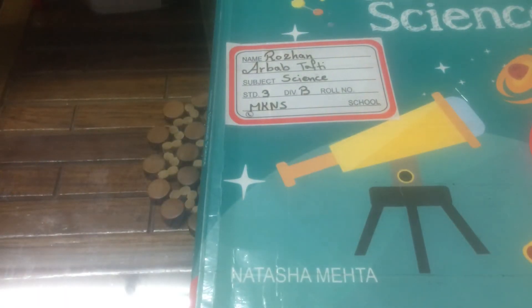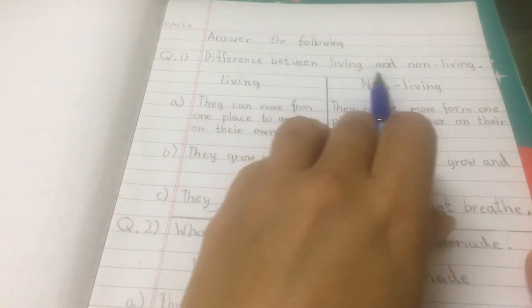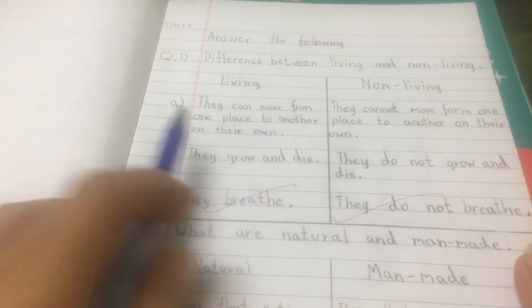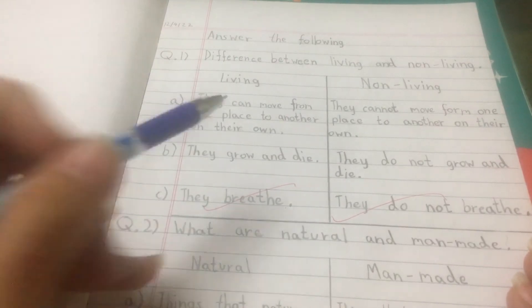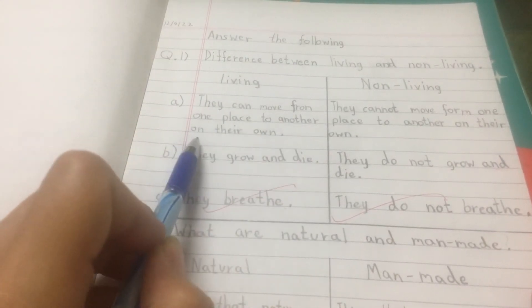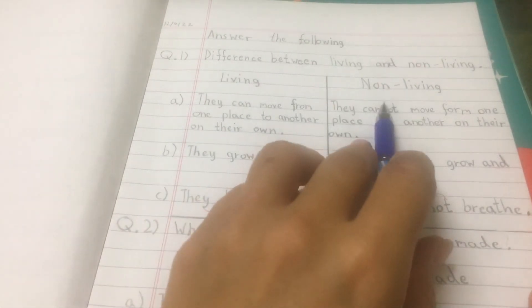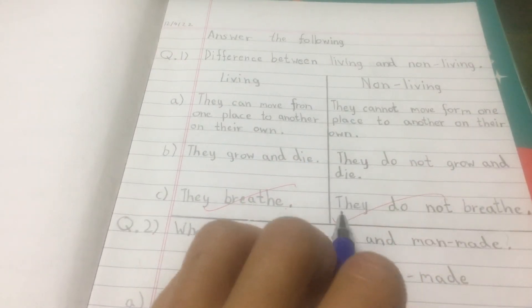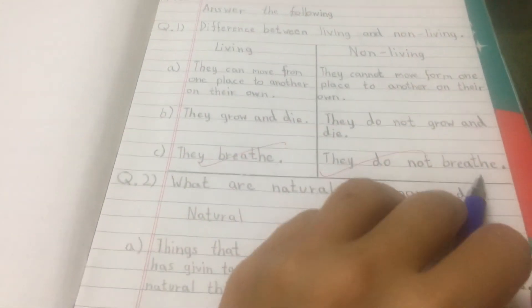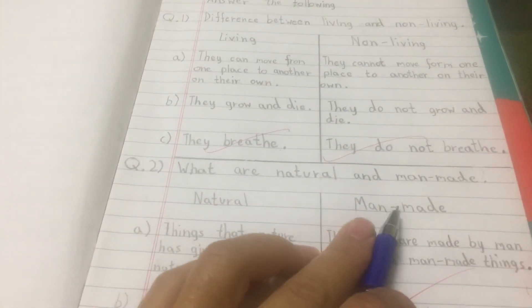Now let's move on to questions and answers. Question one — differences between living and non-living things: living things can move from one place to another on their own, they grow and die, and they breathe; non-living things cannot move on their own, do not grow and die, and do not breathe.